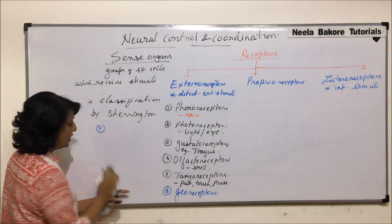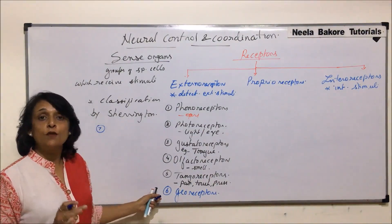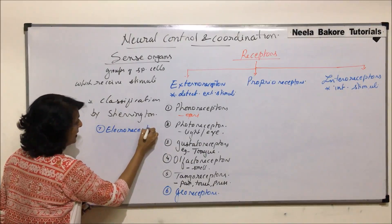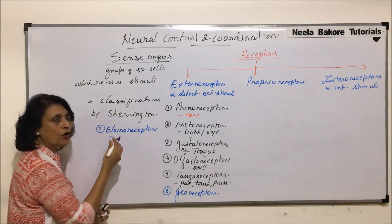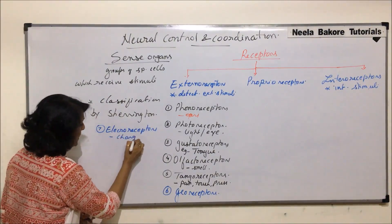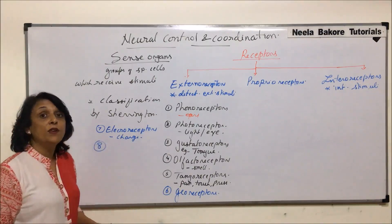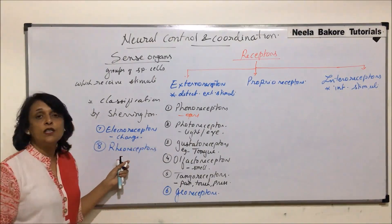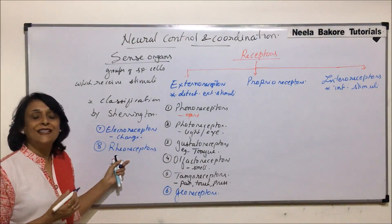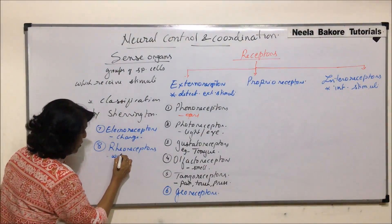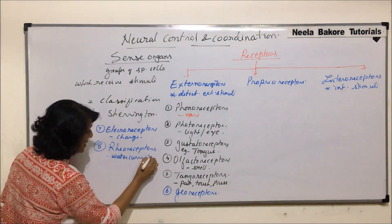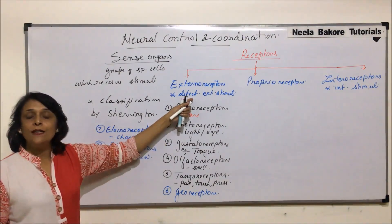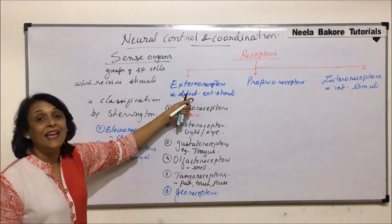After georeceptors, there are certain receptors found in fishes. These are known as electroreceptors — they help in detection of some electrical charge or current. Then there are rheoreceptors, which are required to detect changes in water current.